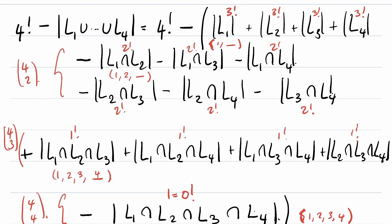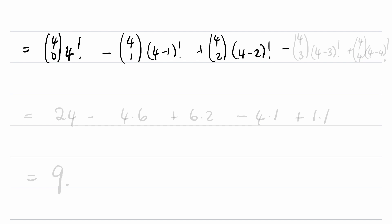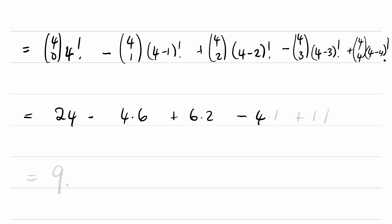I've set this up on purpose to make the final answer have a beautiful form. This is going to be: 4 factorial, which equals C(4,0)·4! minus C(4,1)·3! plus C(4,2)·2! minus C(4,3)·1! plus C(4,4)·0!. Computing: 24 minus 4·6 plus 6·2 minus 4·1 plus 1·1 = 24 − 24 + 12 − 4 + 1 = 9.